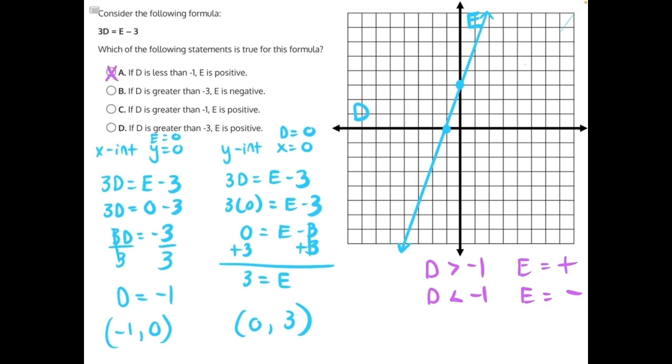B says if D is greater than negative 3, negative 3 would be here, E is negative. So let's put that on the graph. Negative 3 is right here. Greater than is to the right. These are all negative values so far, but once we pass this point here, our x-intercept, all of the rest of the values are positive, not negative. So that makes answer choice B incorrect.